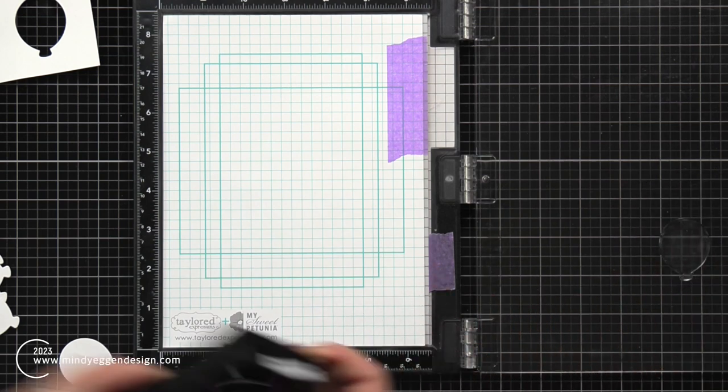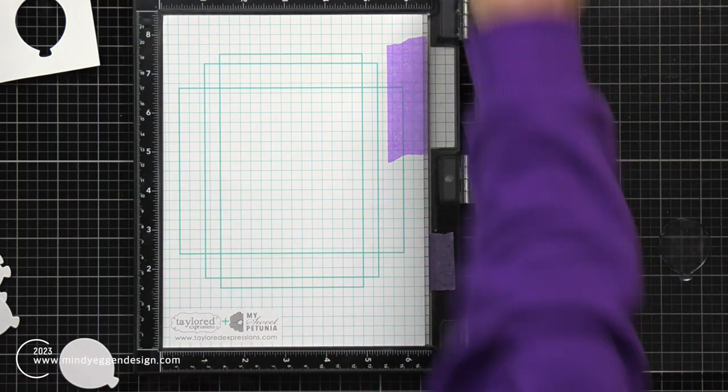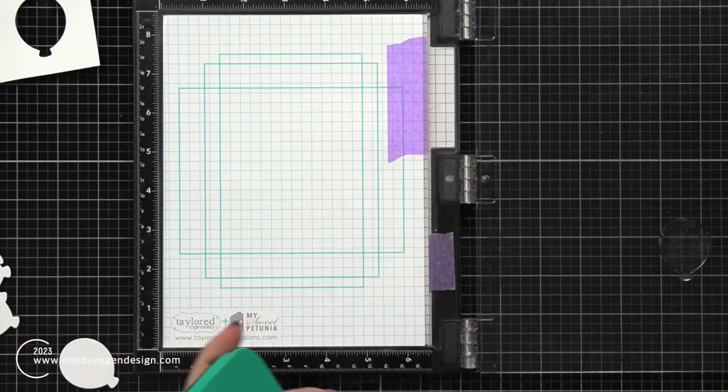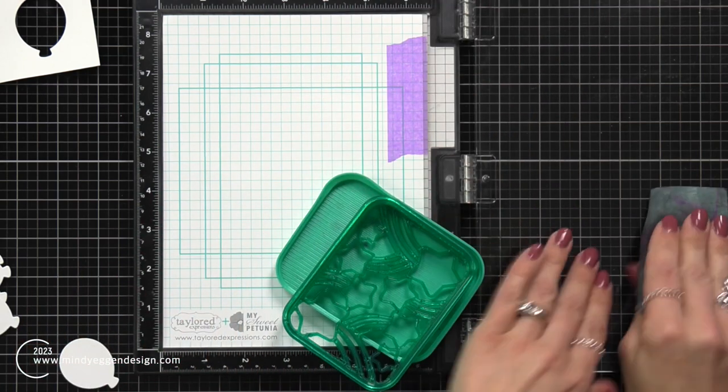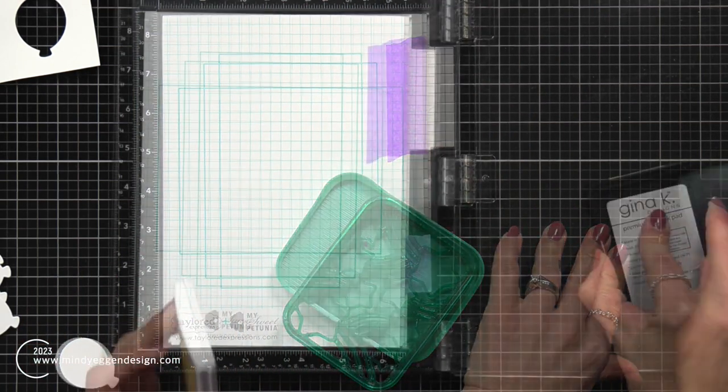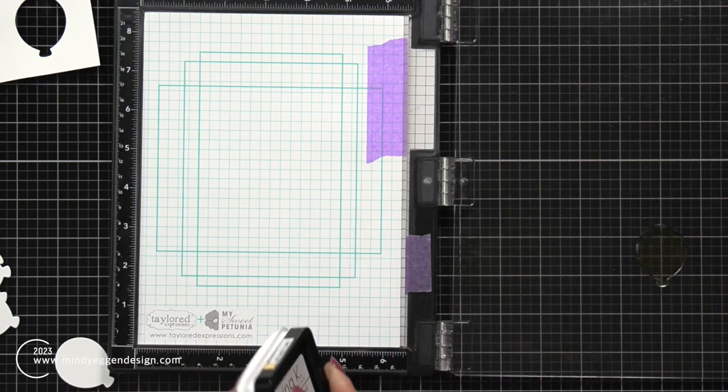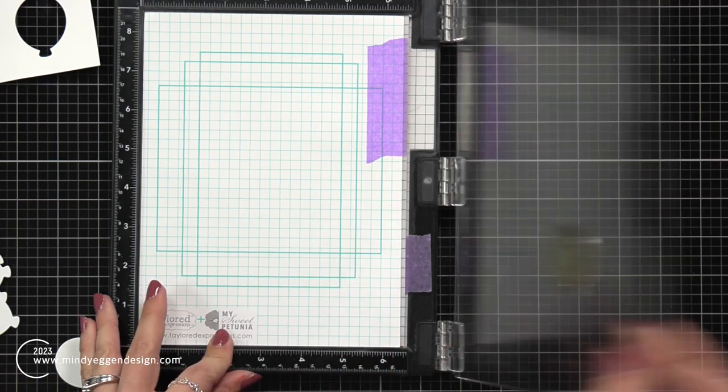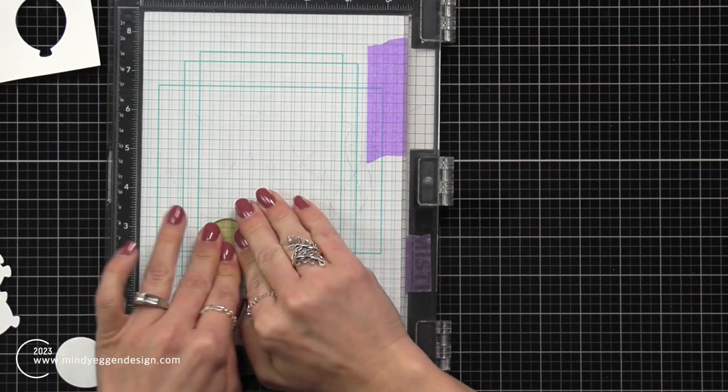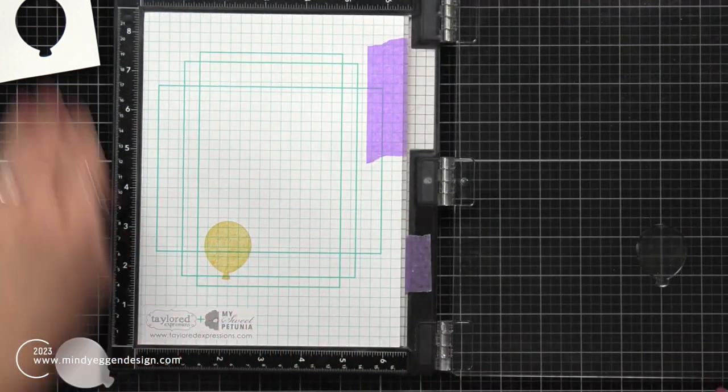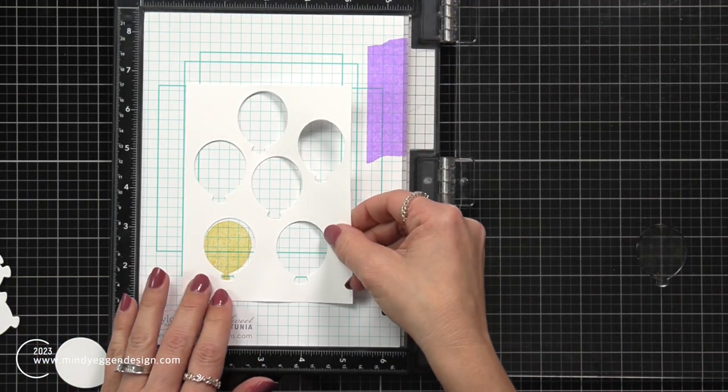So the first thing I'm doing is I'm taking the solid balloon image and I'm going to condition it with my Versamark. I inked it up with the Versamark ink then wiped it clean with a stamp chamois because it's a solid image. I want to make sure I'm getting really great coverage. Now I'm inking this up with a light yellow ink just to stamp it down onto some scratch paper that I have in my Misti.